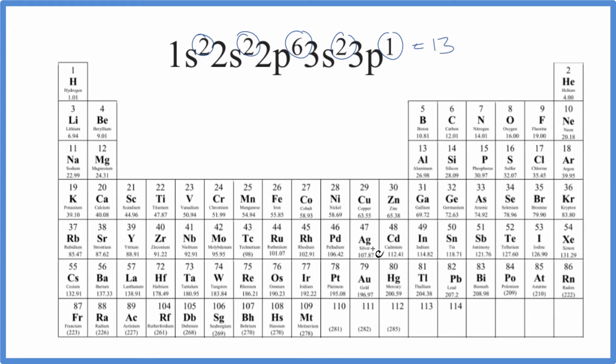All of the elements on the periodic table are neutral. The number of electrons will equal the number of protons. So as we look down here, right here, aluminum, atomic number 13. That means it has 13 protons. Since it's neutral, it'll have 13 electrons, just like our electron configuration.